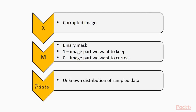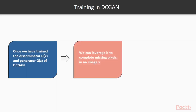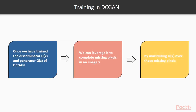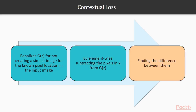And P_data is the unknown distribution of sample data. Once we have trained the discriminator D(X) and generator G(Z) of DCGAN, we can leverage it to complete missing pixels in an image X by maximizing D(X) over those missing pixels. Contextual loss penalizes G(Z) for not creating a similar image for the known pixel location in the input image, by element-wise subtracting the pixels in X from G(Z) and finding the difference between them.